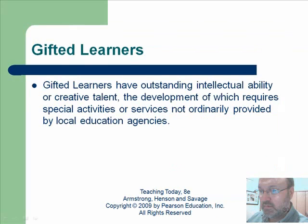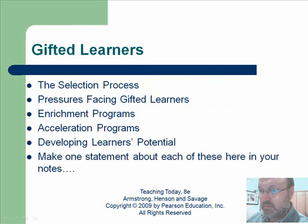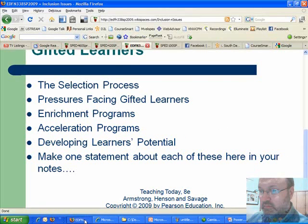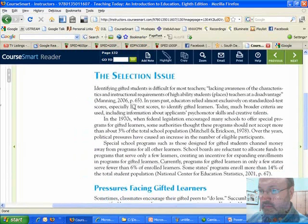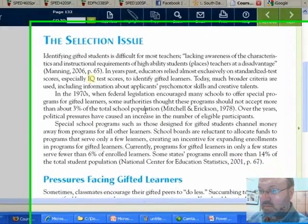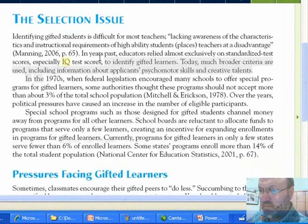Gifted students are a special group just like kids with learning needs — they also need special instruction. Gifted students have outstanding intellectual ability or creative talent, the development of which requires special activities or services not ordinarily provided. The textbook also discusses the selection process and pressures facing gifted learners — the pressure to always be the best, never make a mistake, to be flawless — to the point where some kids don't want to be identified as gifted. The selection process used to always be an IQ test, but today a much broader set of criteria is used.